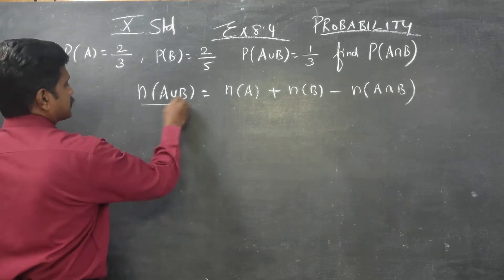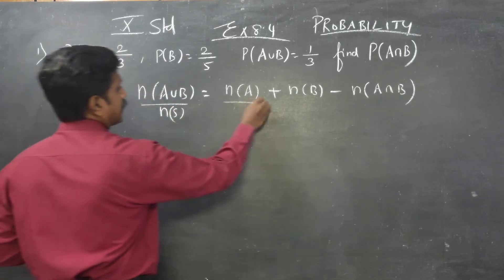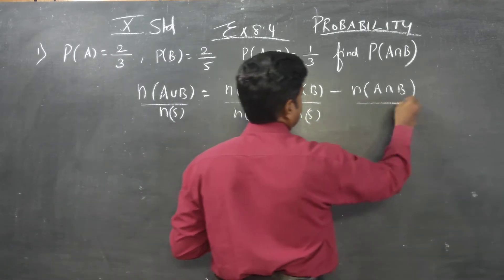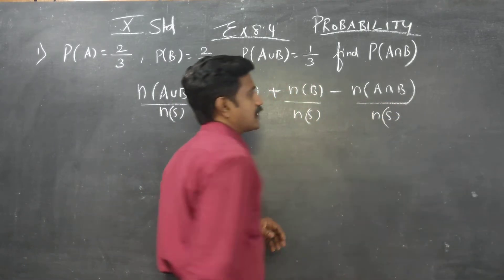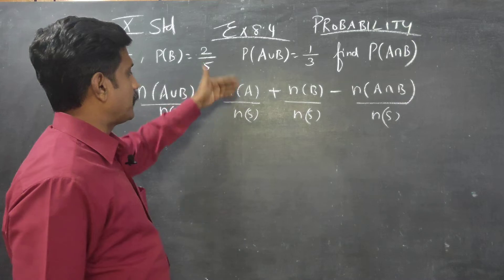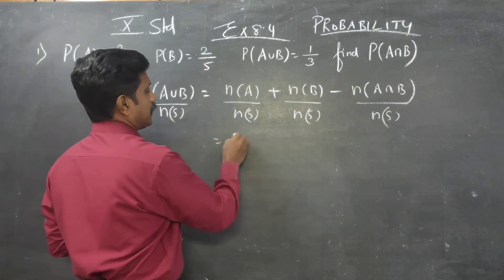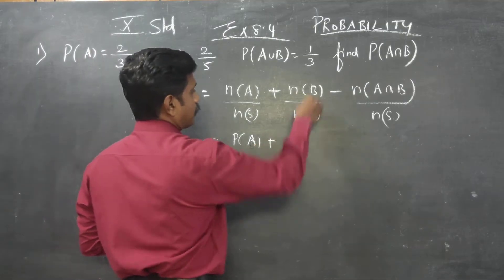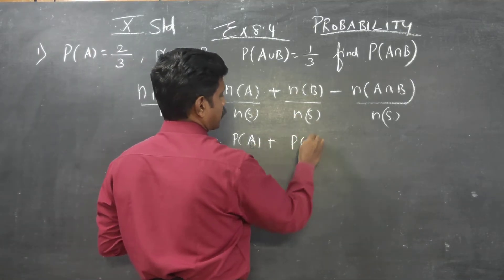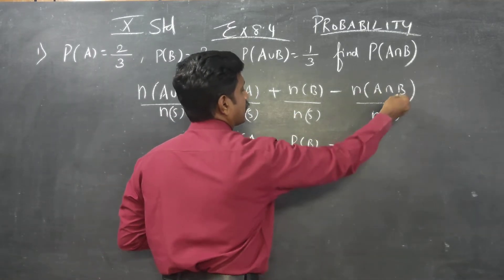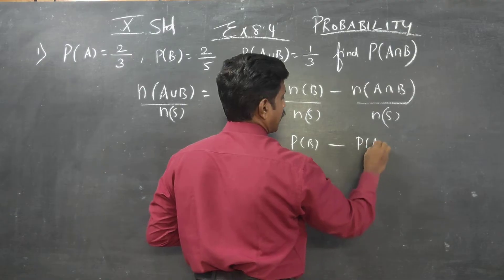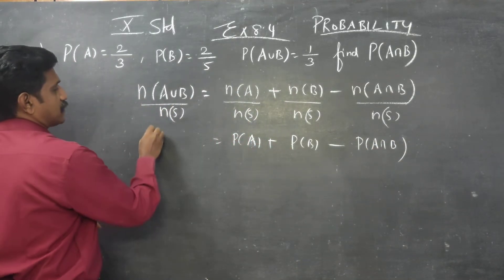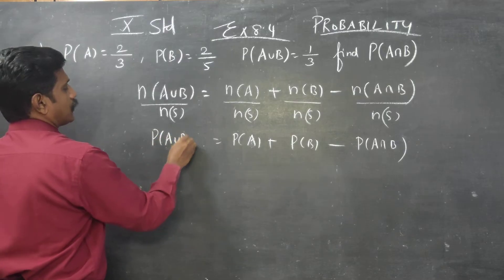Dividing throughout by n of S: n of A by n of S is probability of A, n of B by n of S is probability of B, n of A intersection B by n of S is probability of A intersection B, and n of A union B by n of S is called probability of A union B.